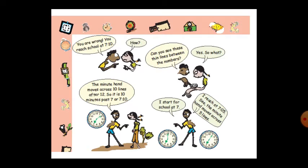Is that right? No. Pampush is telling: you are wrong, you reach school at 7:10. See, can you observe the thin lines between the numbers on the clock? If you count those thin lines, the minute hand moves across 10 thin lines after 12 when pointing at 2. So it is 10 minutes past 7, meaning the time is 7:10.